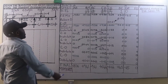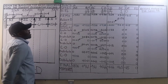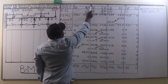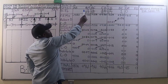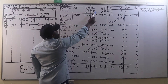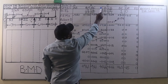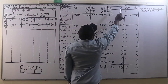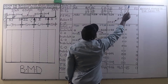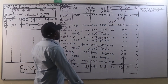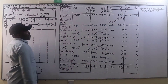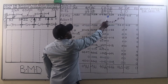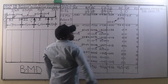From there we had calculated the distribution factors: for member BA at joint B we had 15/29, BC 14/29, for member CB 32/47, CD 15/47, for members DC 1 and DE 0. The fixed end moments have also been calculated and each of them has been written at its required position.